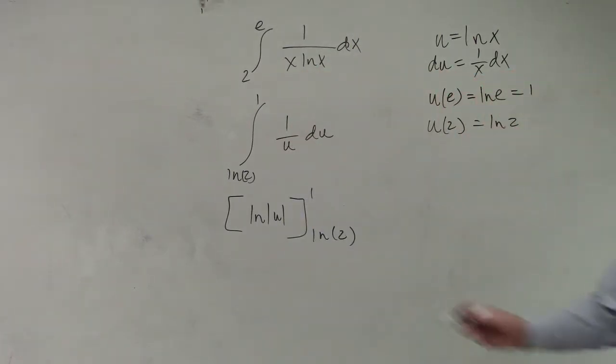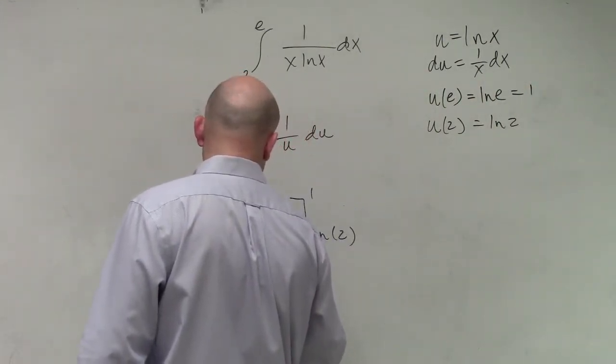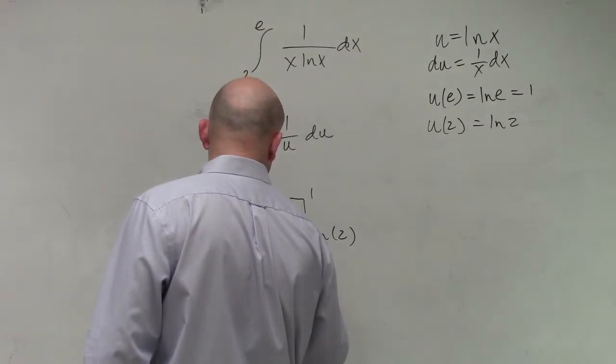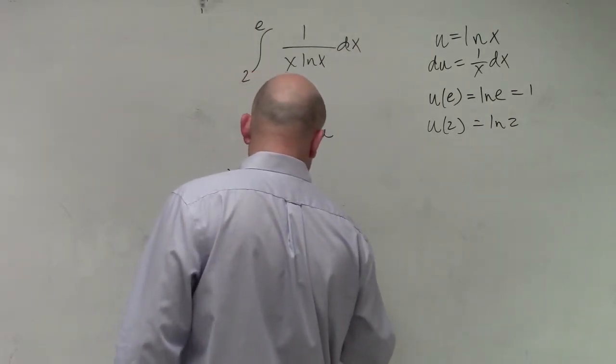So you integrate, and then you're going to have to evaluate it from 1 to ln of 2. So you have the ln of absolute value of 1, which is just 1, minus ln of ln of 2.